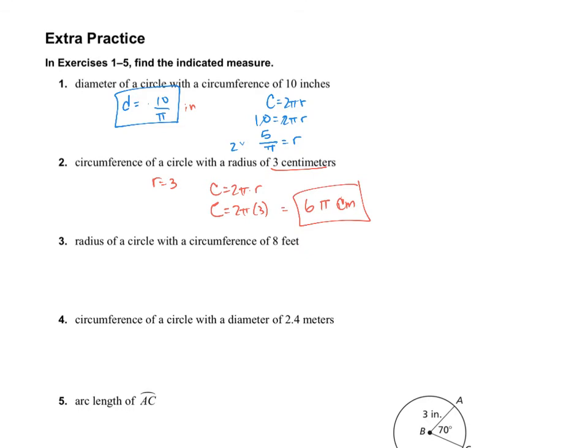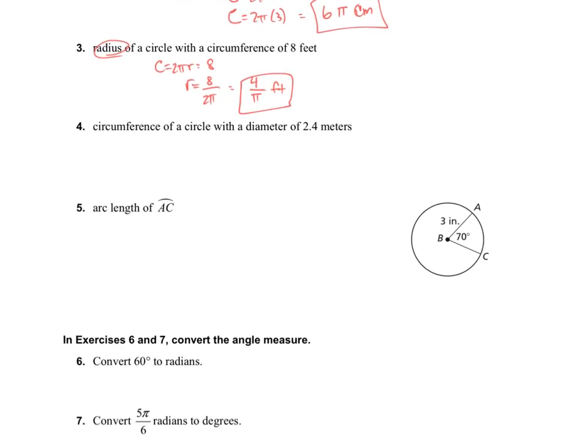The radius of a circle with a circumference of 8 feet. So the circumference is 2πr, which is 8. And we need the radius. So that means the radius will be 8 divided by 2π, which will be 4 over π feet. Then moving on to number 4, we need the circumference of a circle with a diameter of 2.4. So the circumference is 2πr, or it's π times the diameter. And the diameter is 2.4. So we're just going to leave it at 2.4π meters.